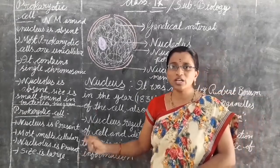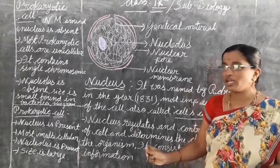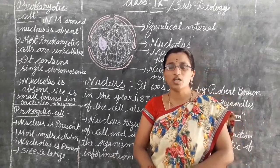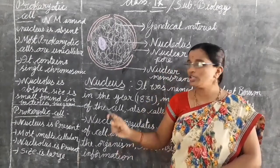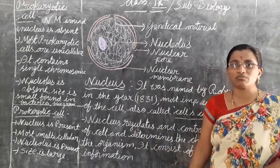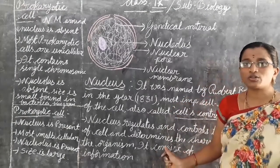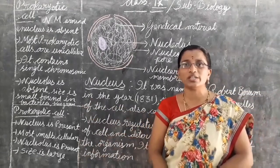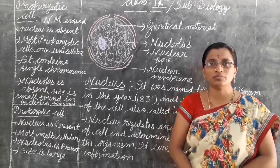This is about the structure of the nucleus and its function. It was discovered by Robert Brown in the year 1831. Based on presence and absence of the nucleus, cells are classified as prokaryotic cells and eukaryotic cells. For today's assignment, draw and label the nucleus, write its functions, explain why it is called the control room of the cell, and describe the two types of cells. Thank you, children.